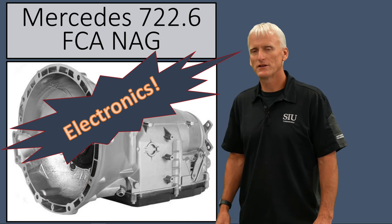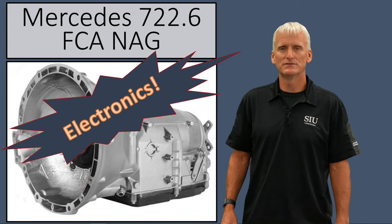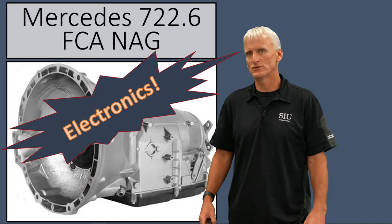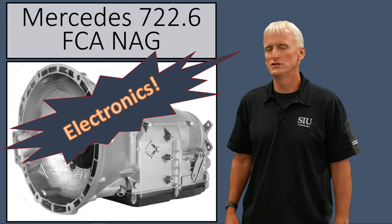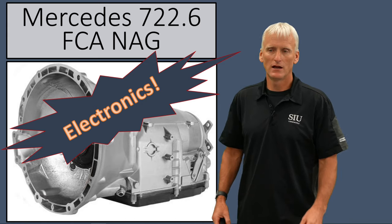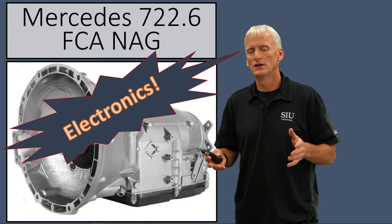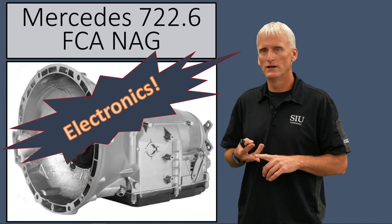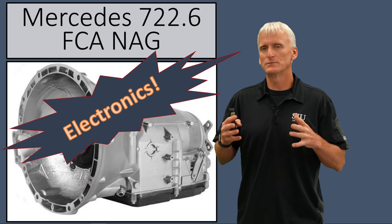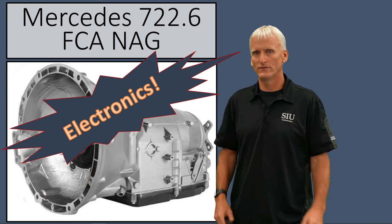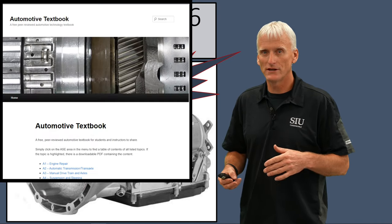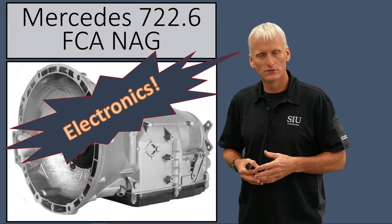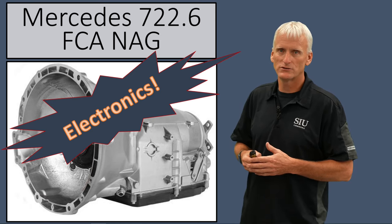Hello, my name is Sean Boyle and I teach at the Southern Illinois University Automotive Technology program. This video covers the Mercedes 722.6 electronics, also known as the NAG transmission found in common Jeep, Chrysler, and Dodge vehicles. This is part of a series where I've covered the mechanical, hydraulics, complete overhaul, and aftermarket enhancements. You can find those at AutomotiveTextbook.com under the automatic transmission curriculum link, or on YouTube under the automatic transmissions playlist.